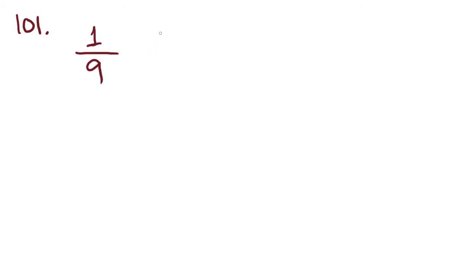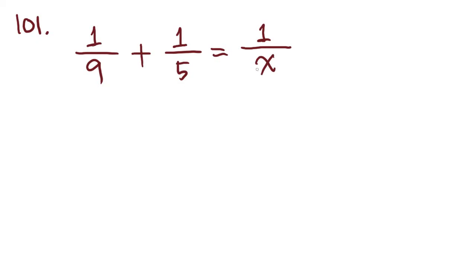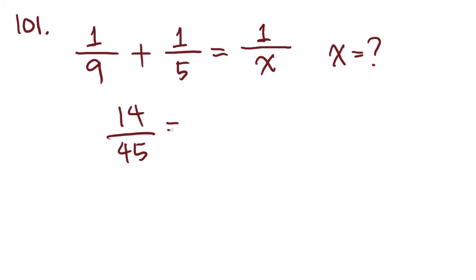Problem 101: the water from one outlet flowing at a constant rate can fill a swimming pool in 9 hours, and another outlet can fill the same pool in 5 hours. If these outlets are used at the same time, we're going to add these two rates together. We know they're filling one pool, and we're looking for how long it takes, so once we set up this equation we solve for x. The sum of rates is 1/9 plus 1/5 equals 1/x, which gives us 14 over 45 equals 1/x.